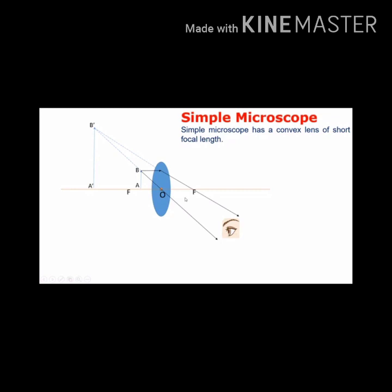Let us see the simple microscope in detail. See the diagram - this is a simple microscope. A simple microscope has a convex lens of short focal length. The distance between the pole and the principal focus is called the focal length. So the lens has a very short focal length.